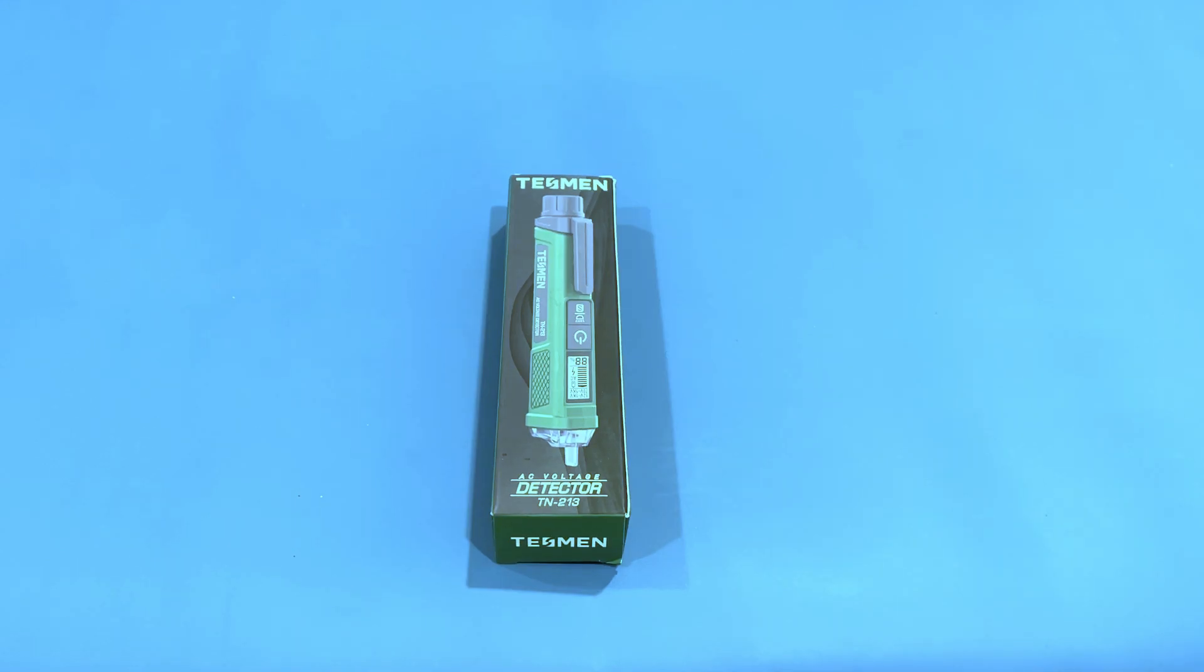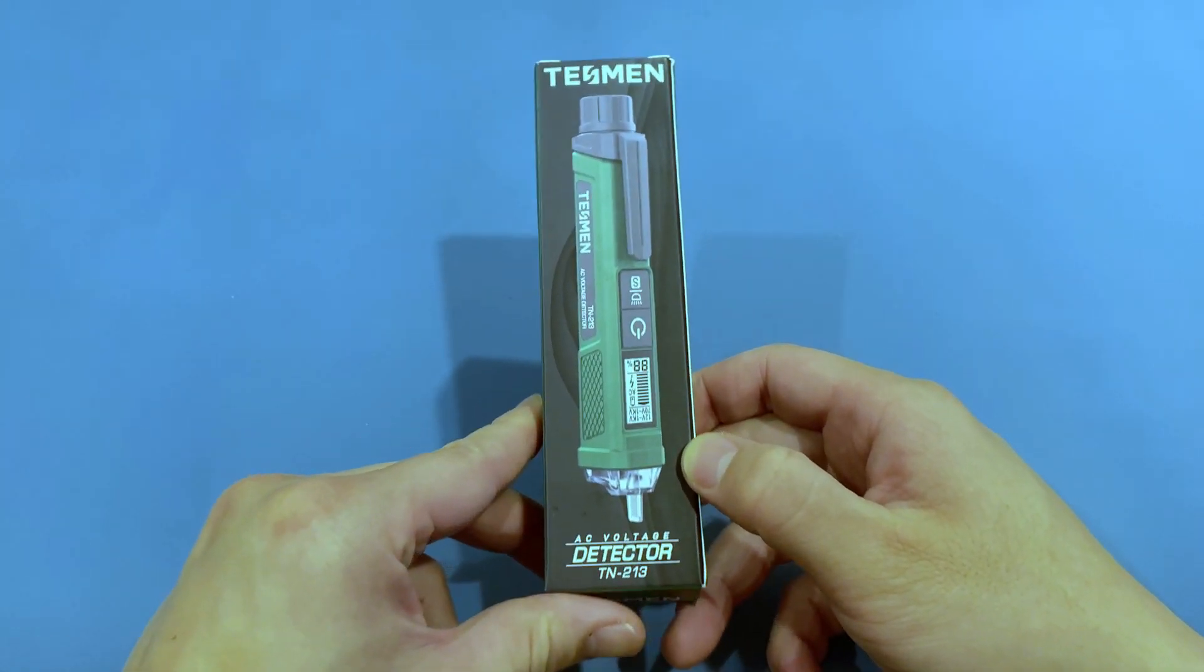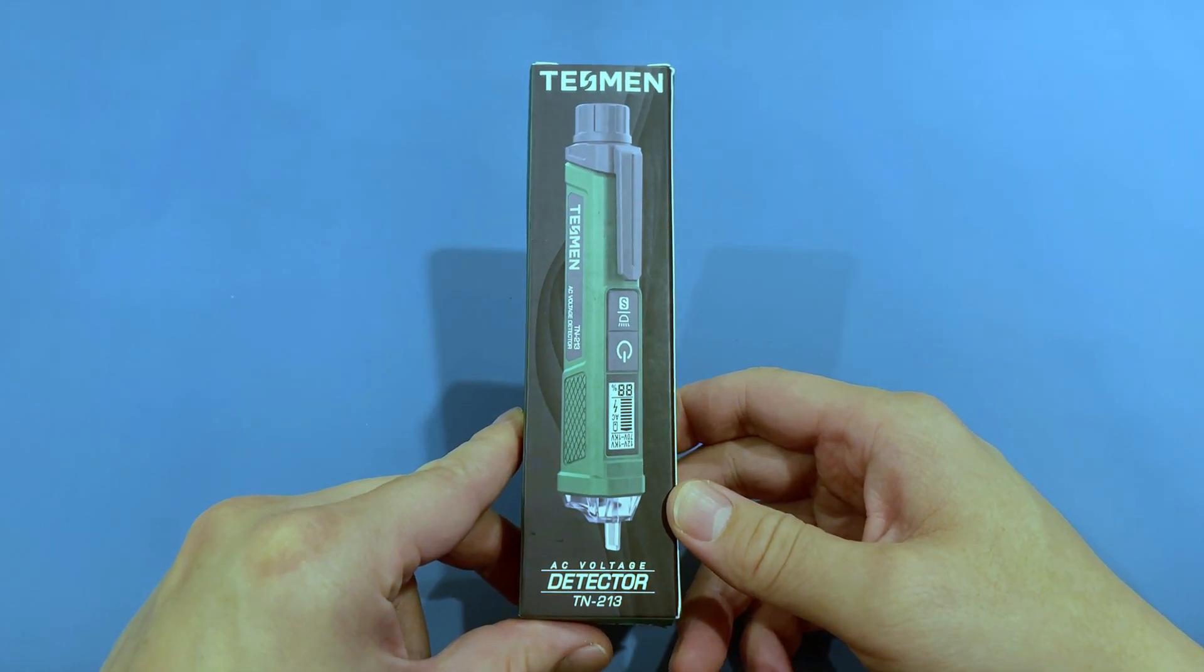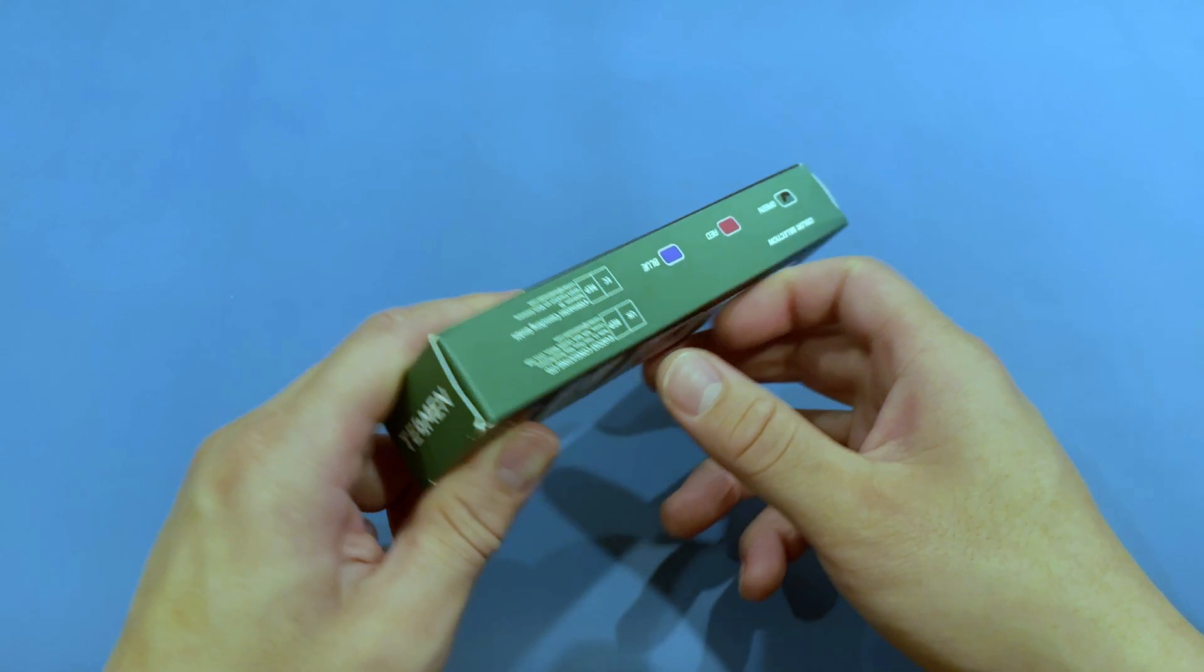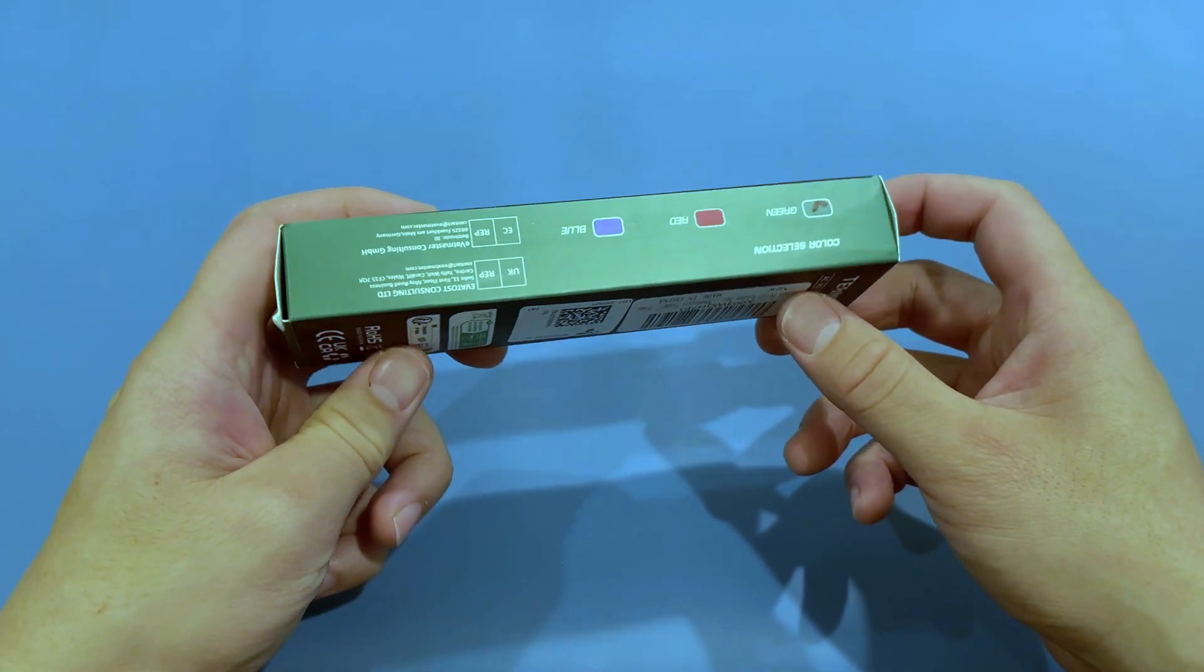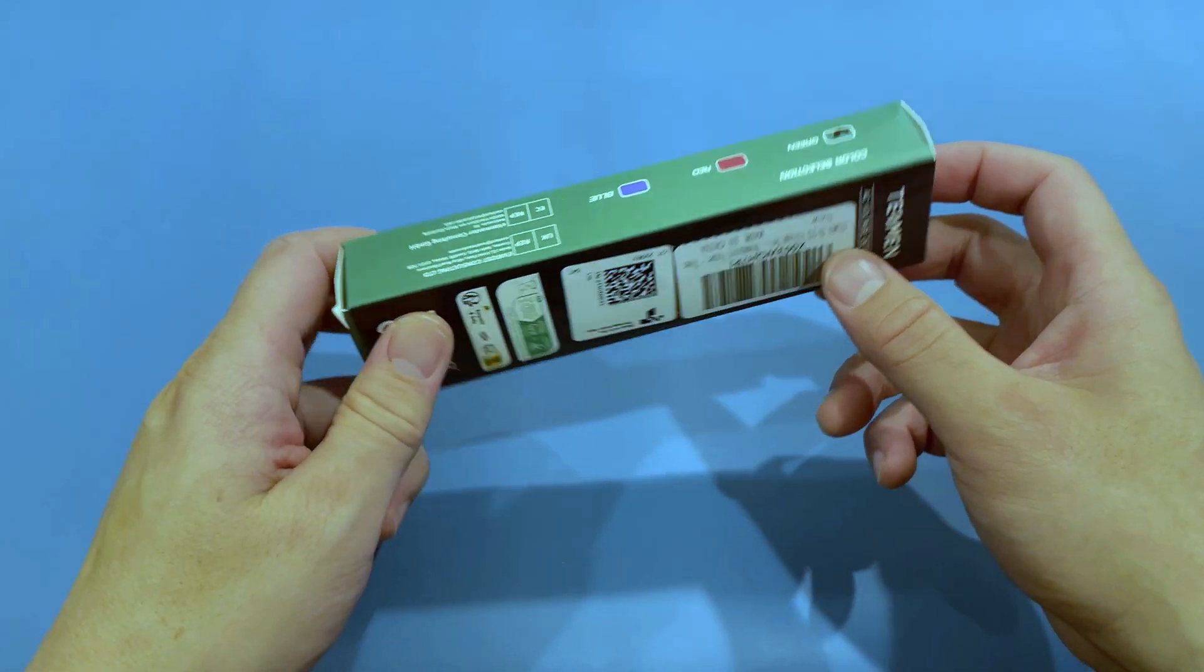Hey guys, in today's video we are doing a review of the Testament TN213 non-contact voltage tester. This multimeter comes with various features such as water resistance with IP66 rating, a flashlight, an LCD screen, and many more that we will test.